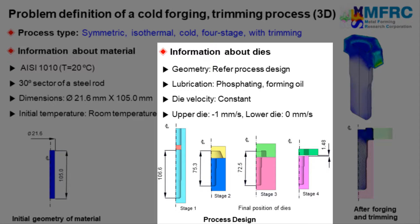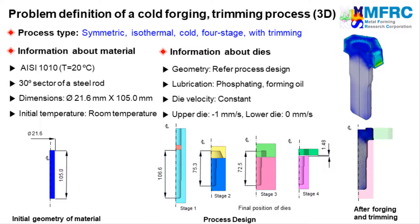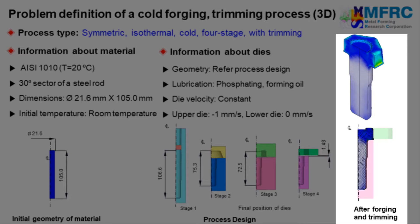A constant velocity condition will be used in this simulation because the material is rate independent. The upper die will move downward with a constant velocity of 1 mm per second and the lower die will remain stationary. The problem definition is complete. The result of the simulation would be a forged component as can be seen on the right side.